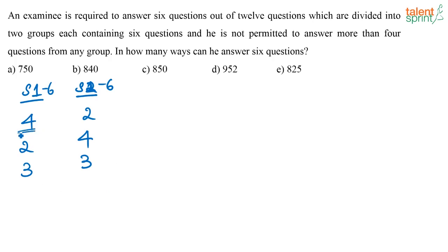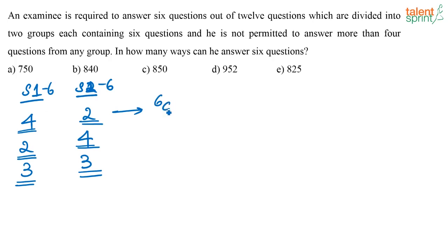From section 1 he answers 4 and section 2 he answers 2, or from section 1 he answers 2 and section 2 he answers 4, or from section 1 he answers 3 and section 2 also he answers 3. For the first case, he selects any 4 from 6 questions in section 1, and any 2 from 6 questions in section 2.